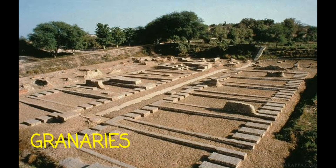Granaries were found both in Harappa and Mohenjo-daro, probably used for storing surplus grains. They were located near the river banks, with rows of circular brick platforms meant for threshing grains. At Harappa, archaeological remains point to the presence of workshops of metal workers next to the granaries. Remains of furnaces indicate that metal workers produced objects of copper, bronze, tin, and lead.